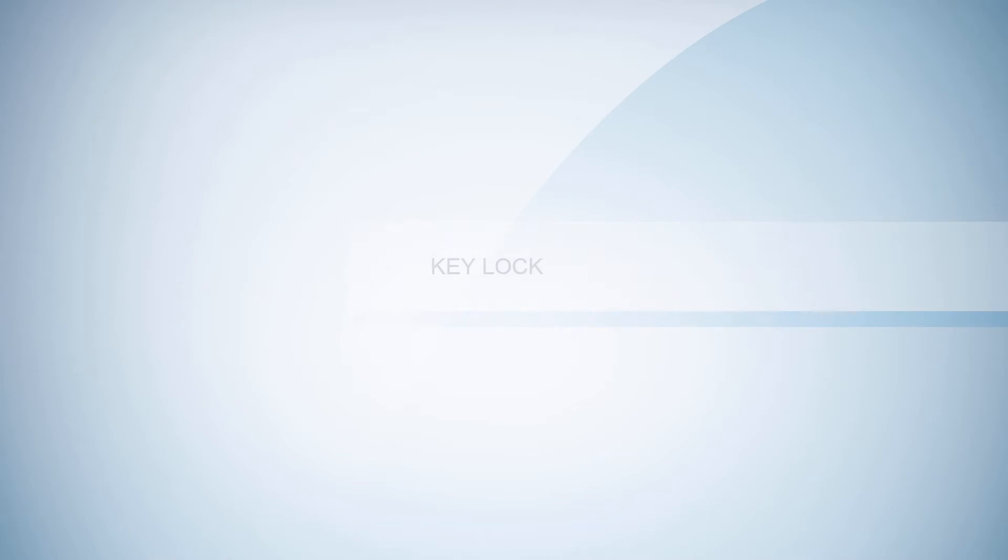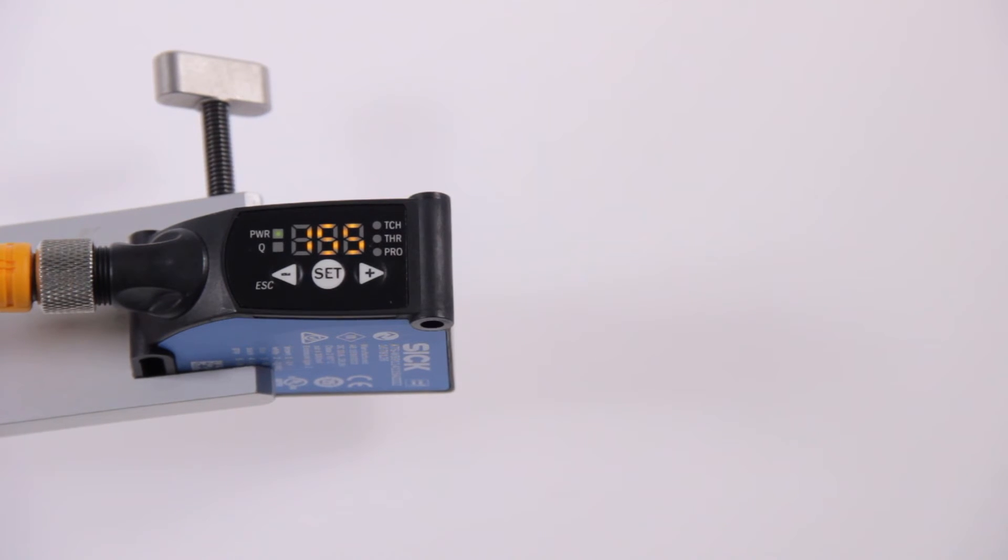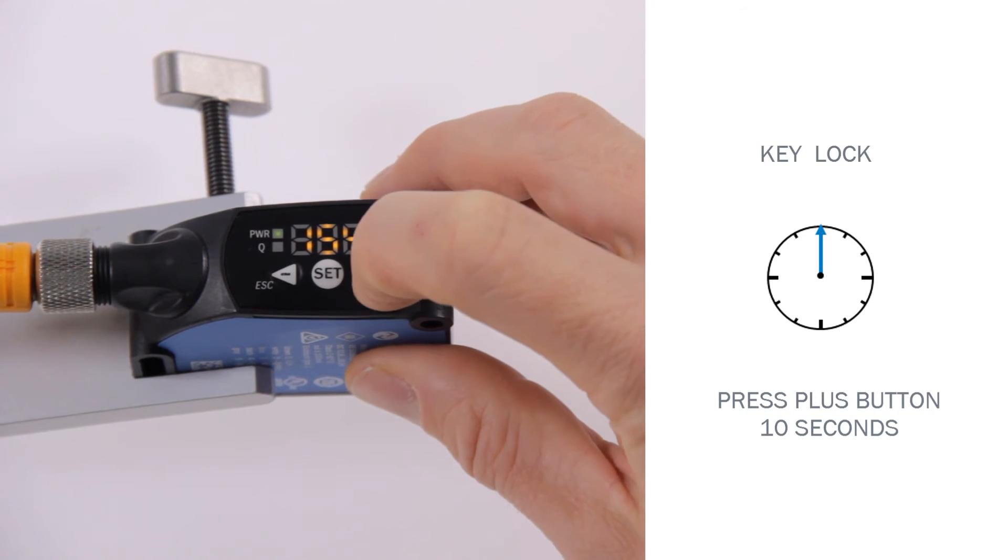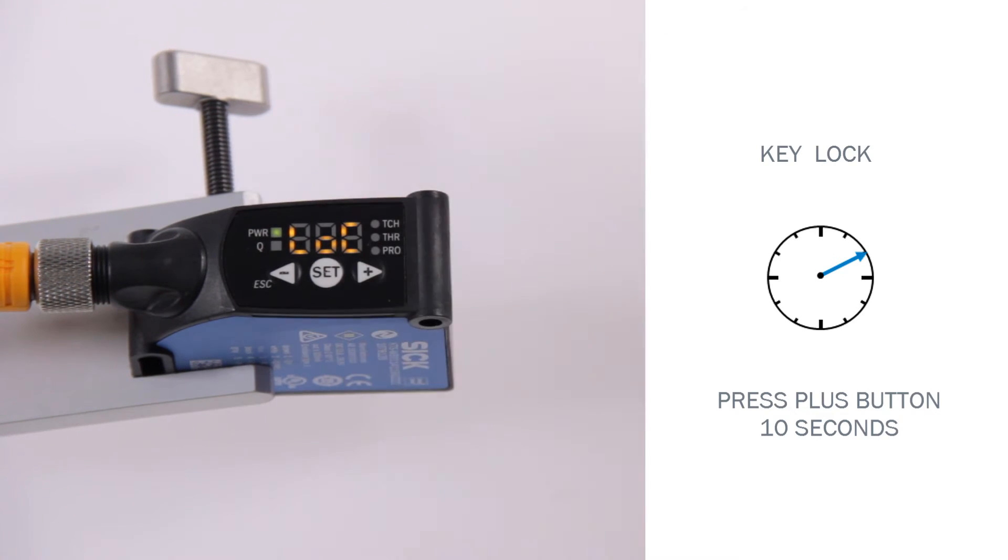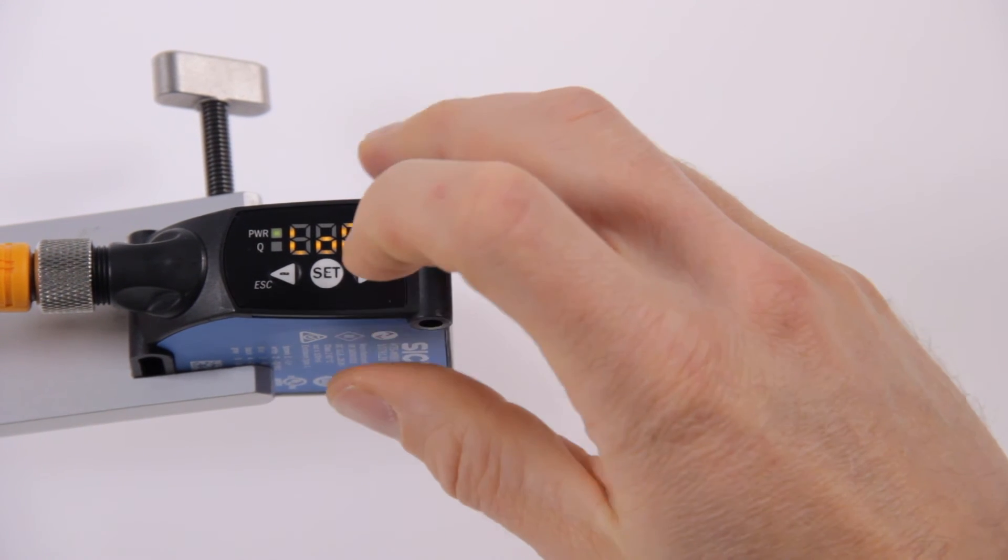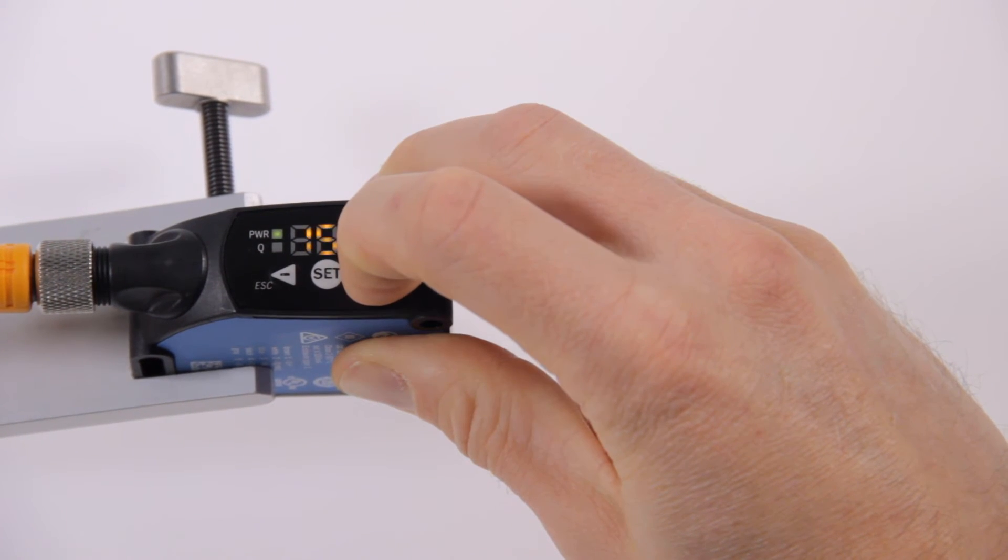Key lock. The push buttons can be locked with the key lock function. Press the plus button for longer than 10 seconds and the keypad is locked. LOC is displayed. For unlocking, press the plus button for 10 seconds again.